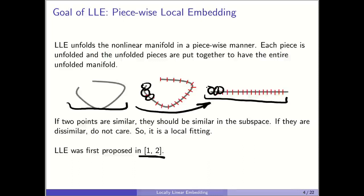Why 1D? Because its intrinsic dimensionality is 1. Intrinsic dimensionality means: if you put a small ant on this nonlinear manifold, it doesn't see the whole structure. It just sees what is in front of it. It moves forward and finally reaches the end of the manifold — similar to traversing a line. So the intrinsic dimensionality is 1.